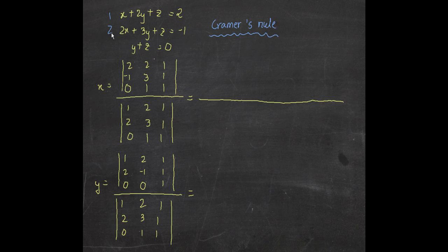Here are the three equations — one, two, and three — a system of three linear equations: x plus 2y plus z equals something, and so on. The first step is to write the matrix. We write down the coefficients of x, y, and z in the denominator: one, two, one for the first equation; two, three, one for the second; and zero, one, one for the third.